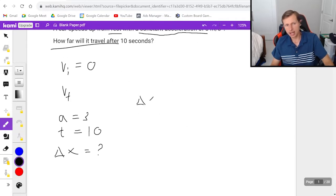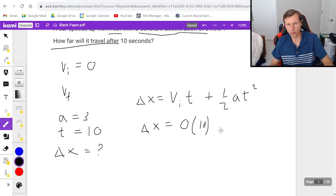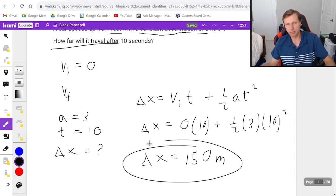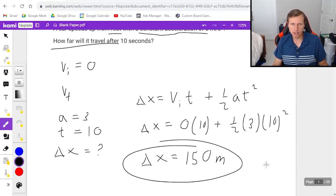So I'm going to write delta x equals v initial times time plus one half a t squared. Delta x is what we're solving for. V initial is zero times 10, which will just be zero, plus one half times 3 times 10 squared. And if you just plug this in a calculator, pretty easy, you're going to get a final answer of 150 meters. And that's how far you travel. Very simple. So that's it for the first one. Now let's look at another example.